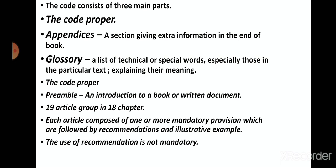The code proper contains a preamble, which is an introduction to the book or written document. It describes what information is given in the book, which is useful for understanding what the book is about and what it is useful for in identification. The code proper contains 19 article groups in 18 chapters, and each article is composed of one or more mandatory provisions followed by recommendations and illustrative examples.